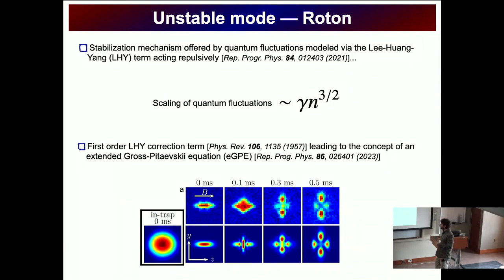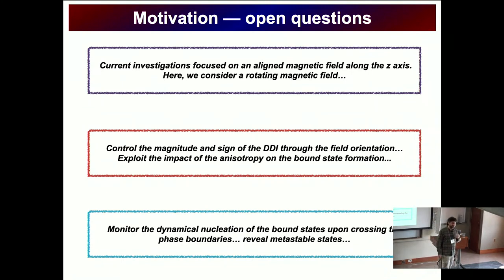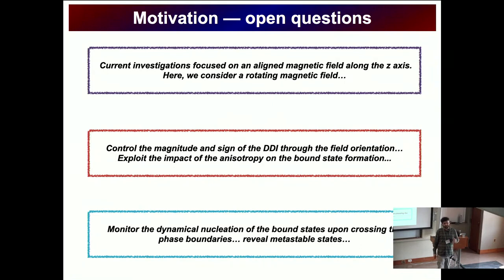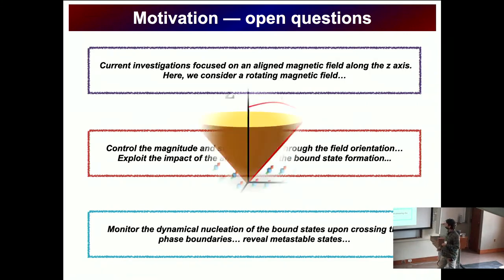Under these first-order corrections, we can use the extended Gross-Pitaevskii framework to describe the static and dynamic properties of the systems, and this framework has been shown to very nicely describe experimental observations. What I will do is use a fast rotating magnetic field to tune the dipole-dipole interactions — both their magnitude and sign — and show its impact on self-bound state formation, how we can shift phase boundaries, and how we can dynamically nucleate these states.